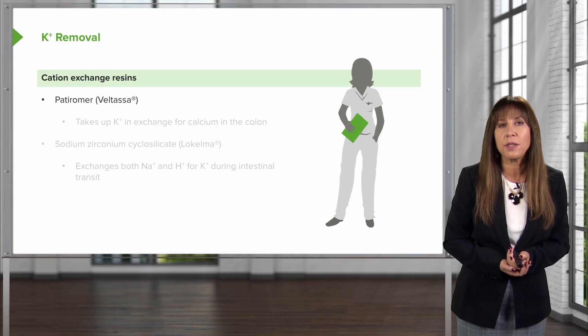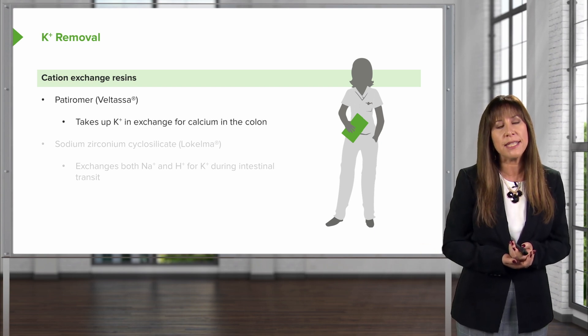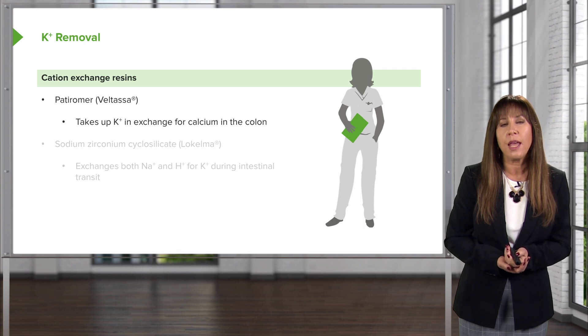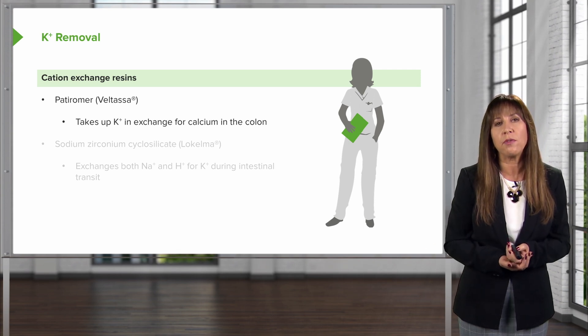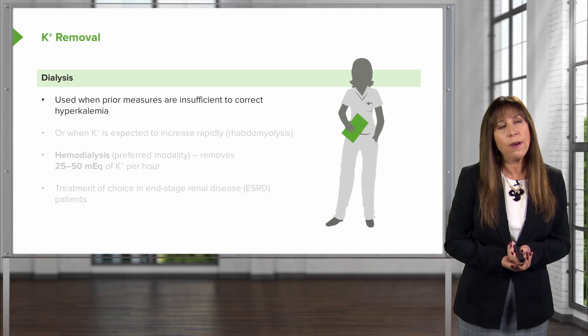There are other cation exchange resins available too. Patiromer, also known as Veltessa, takes up potassium in exchange for calcium in the colon, and will likely replace sodium polystyrene sulfonate in the long term. Another newer agent is zirconium cyclosilicate, which exchanges both sodium and protons for potassium during intestinal transit. This will also likely replace sodium polystyrene sulfonate long term.